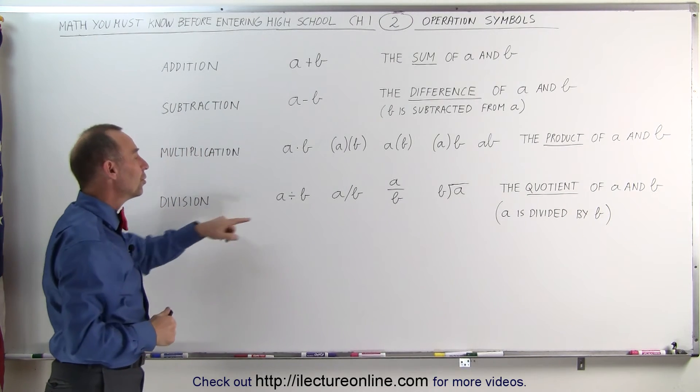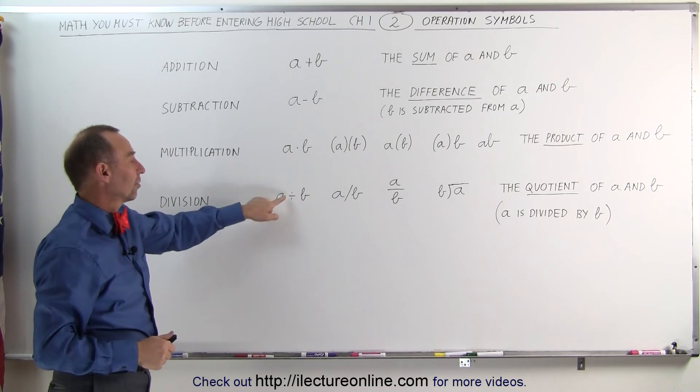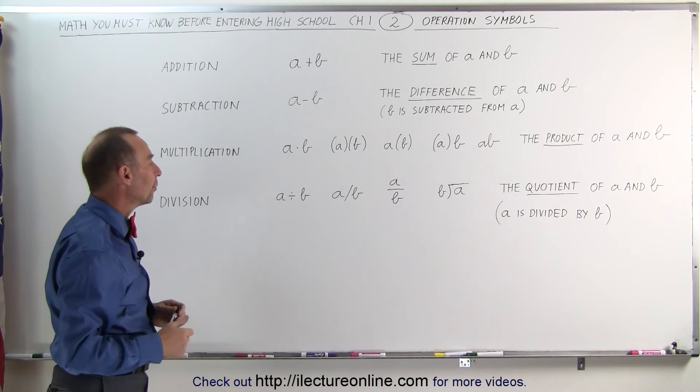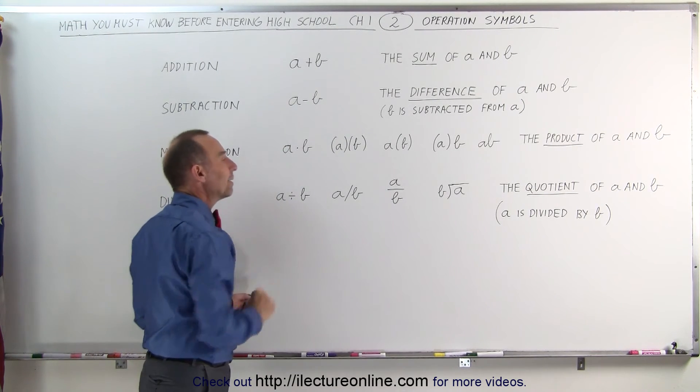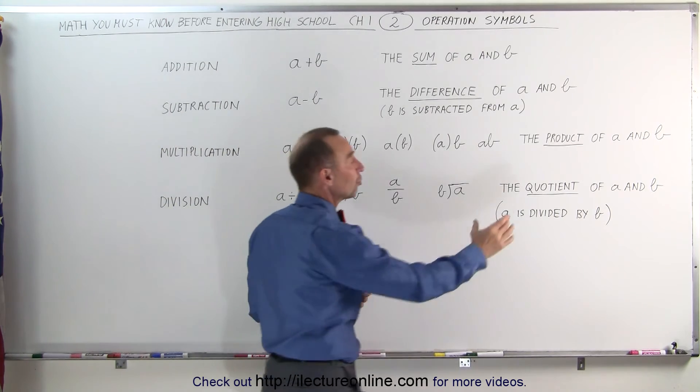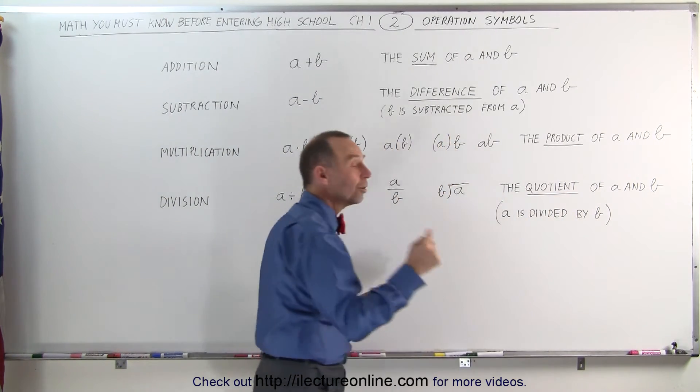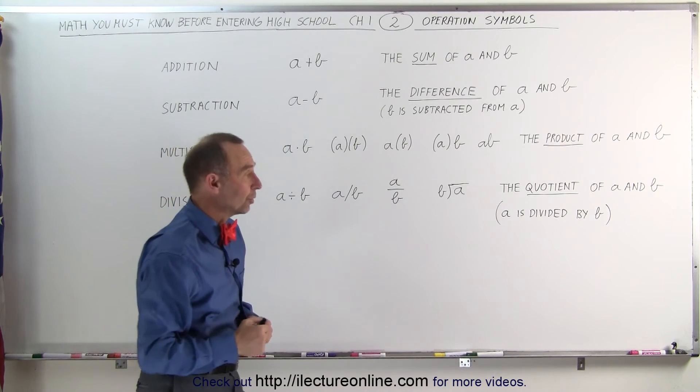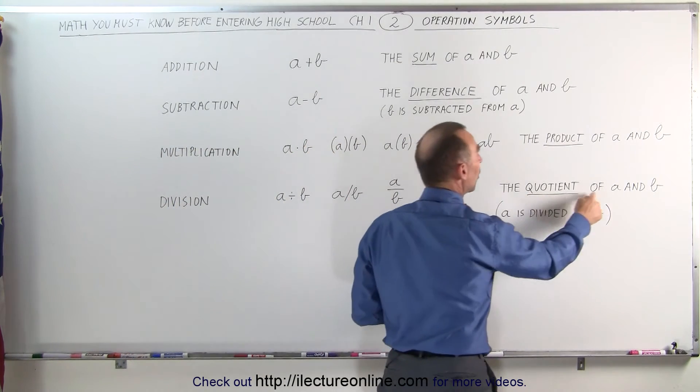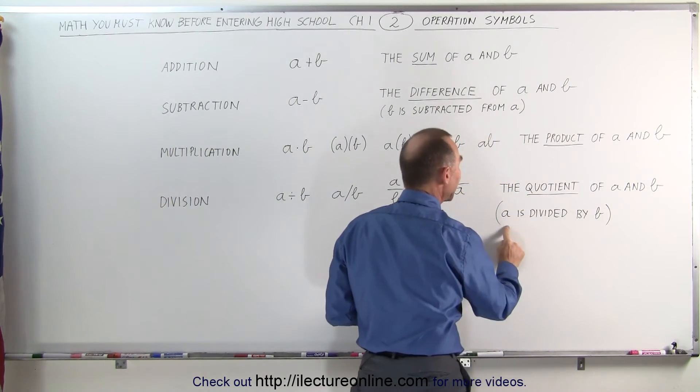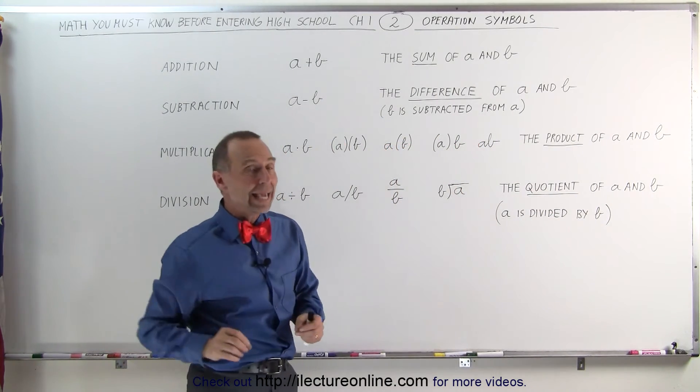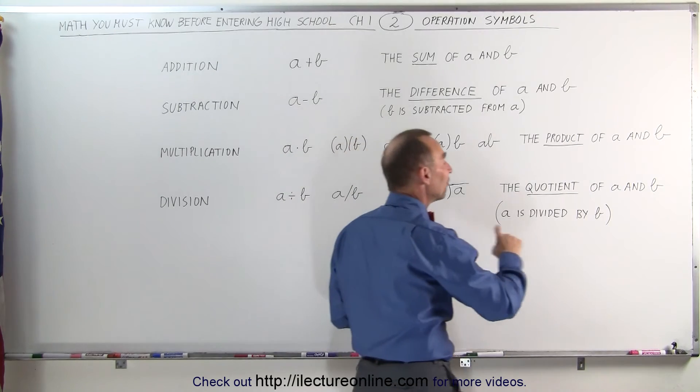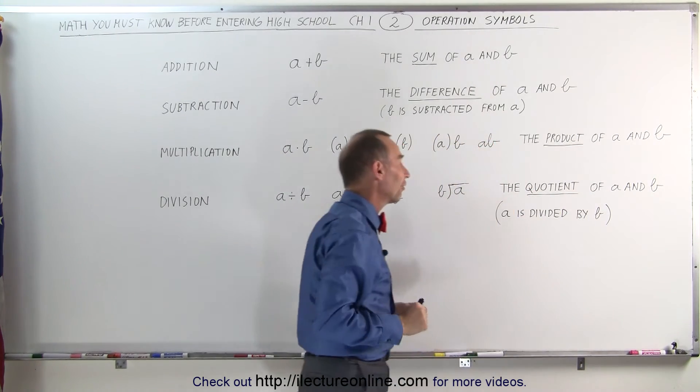When we get to division we use this symbol right here. It's a line with two dots, one above and one below the line. So this means the quotient of a and b. The quotient is the result of division. Order here again just like with subtraction is very important. If you write the quotient of a and b that means that a is divided by b, but if you write the quotient of b and a then it's b divided by a. So the order there is very important.